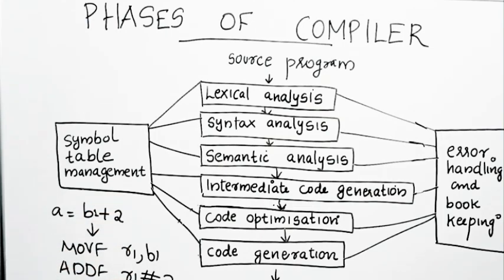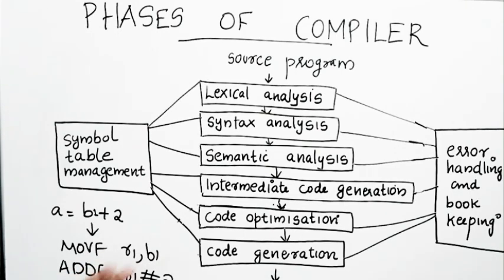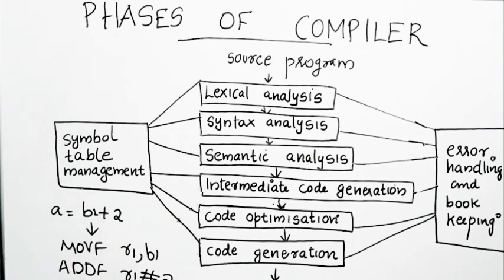The two supporting utilities are: symbol table, which is a data structure that stores every variable in a program with fields for its attributes like size, type, storage class, etc.; and error handling and bookkeeping routines, which detect and report all errors. They either report the error to the user or deal with it so that subsequent phases of compilation can proceed without problems. These are the different phases of the compiler — in the next video we will see the working of each phase with the help of a suitable example.